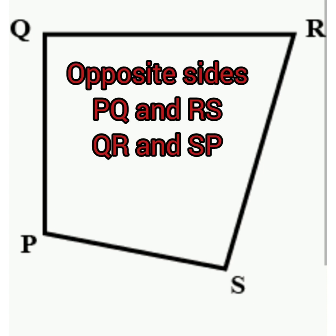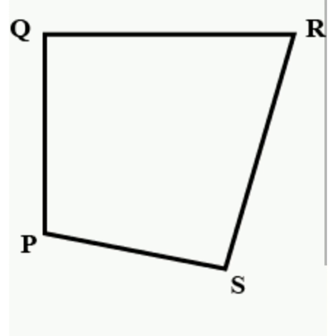Sides that do not share a common vertex are called opposite sides. PQ and RS are opposite sides, and PS and QR are also opposite sides.